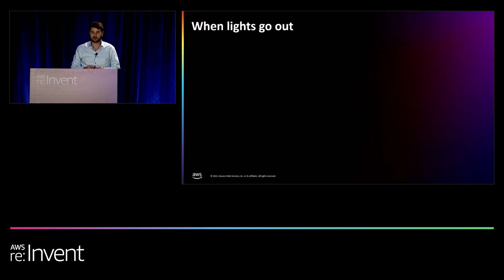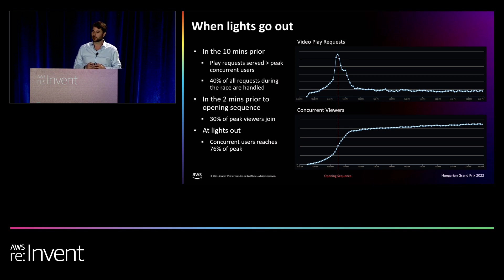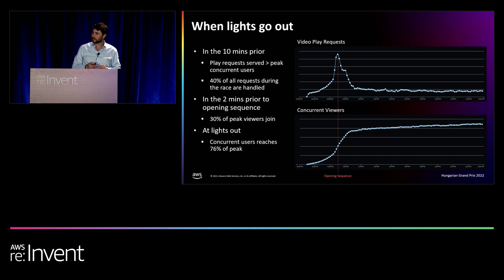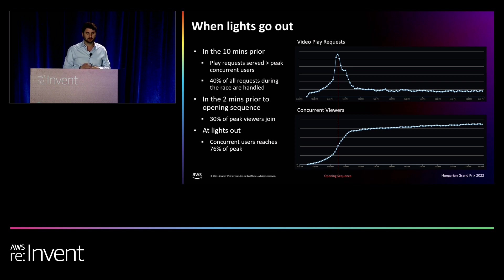We believe that the exclusive content, UI, and features we've built into F1 TV make it the best way to experience Formula One through a season — unless you have a ticket to every race. But the challenge is at Lights Out. The charts here show video play requests and concurrent viewers in the Hungarian Grand Prix earlier this year. What I can show you is the rate, and that is the real challenge. In the 10 minutes prior to Lights Out, we get more play requests than the total peak concurrent users for the entire race. 40% of total requests are handled in that 10-minute window, 30% of all users join in the two minutes prior to Lights Out, and at Lights Out we've reached about 76% of our peak concurrency — an enormous influx of users in a very short amount of time.